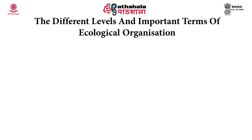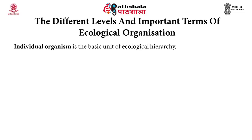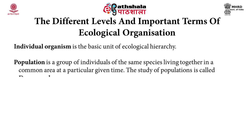The different levels and important terms of ecological organization are as follows. Individual organism is the basic unit of the ecological hierarchy, being a distinct living entity continuously exchanging materials and information with its immediate environment and carrying out all processes in its body, completely separated from other individuals. Population is the group of individuals of the same species living together in a common area at a particular given time. The study of population is called demography.